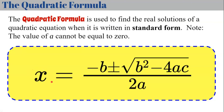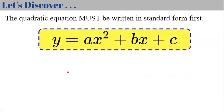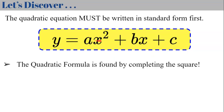We're looking for our x-intercepts, our roots, or our solutions — three different ways you can be asked to solve a quadratic function. To derive it, the quadratic equation must first be written in standard form: y equals ax squared plus bx plus c, where a cannot be zero. The quadratic formula comes from completing the square on the standard form with no specific values for a, b, or c.